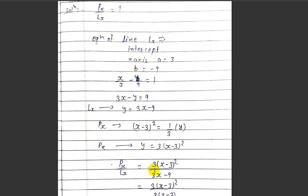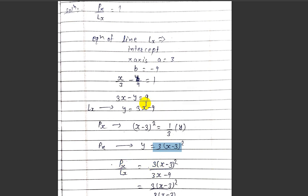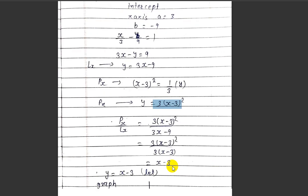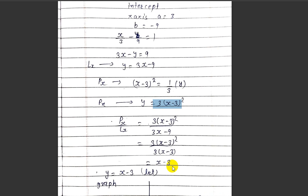Now, p(x) by l(x): p(x) is 3(x minus 3)² and l(x) is 3(x minus 3). When we divide, we take 3 common from the denominator, giving 3(x minus 3)² divided by 3(x minus 3). One factor of (x minus 3) cancels out.